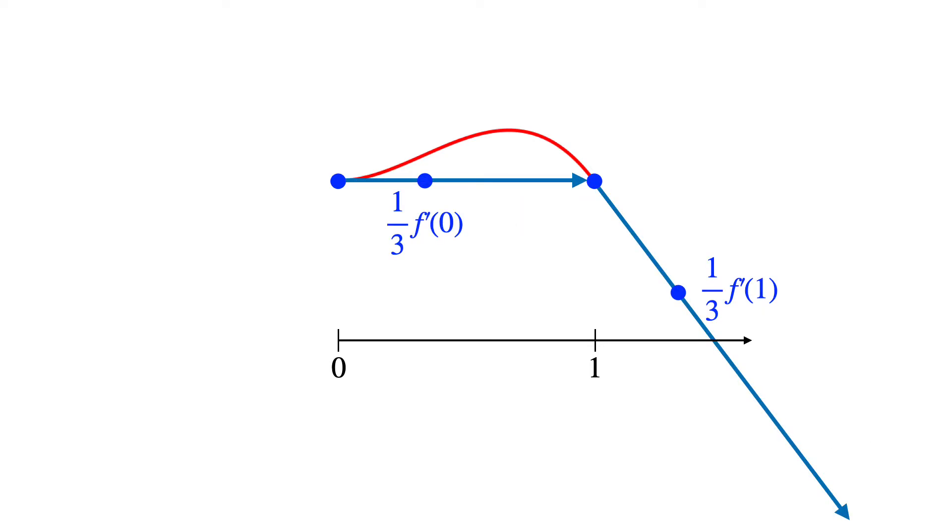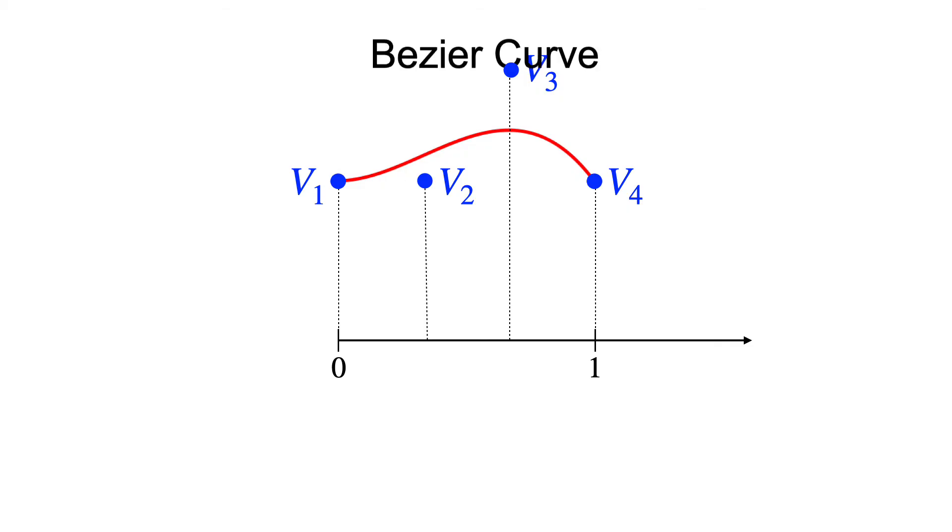So instead, let's introduce additional control points one third of the way along the tangents. And we'll invert the second one so it's closer to the curve itself. This gives us a new way to express cubics called a Bezier curve, and it's got some really nice properties.